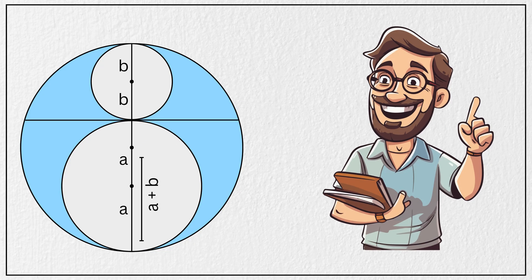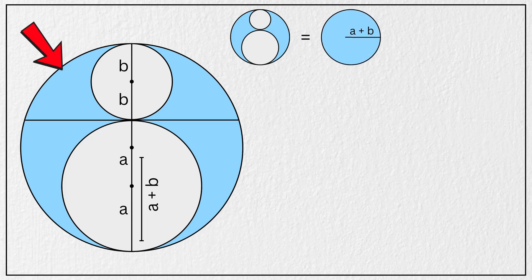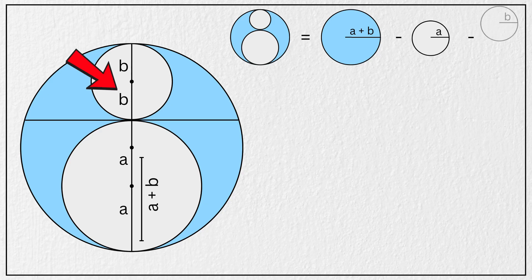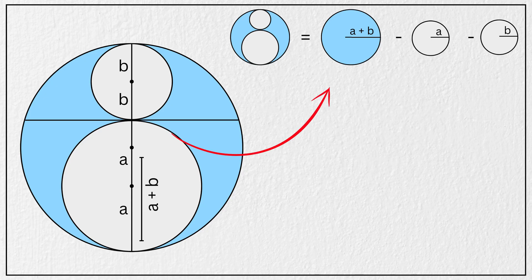Again from the diagram, we can see that the area of this blue-shaded region is simply the area of this large circle minus the area of this circle with radius A minus the area of this circle with radius B. And we know that the area of a circle is given by the formula π times the radius squared. So substituting the values, we get area of the blue region equals π times the quantity A plus B squared minus πA squared minus πB squared.